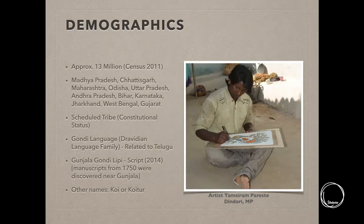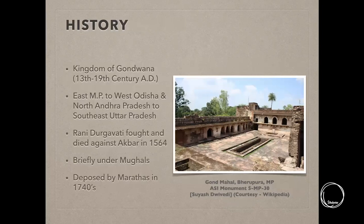Gond people are also known by various other names — 'Koi' and 'Koitor' are a couple of those names. Being one of the oldest and largest communities, let's look at them from a historical perspective. They used to have their own kingdom called Gondwana, which existed from the 13th to the 19th century.